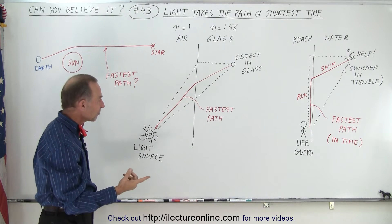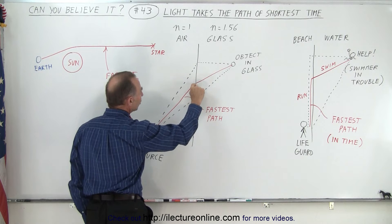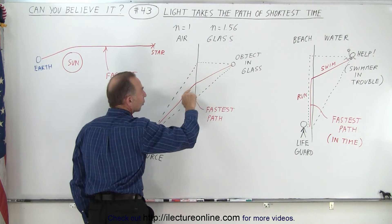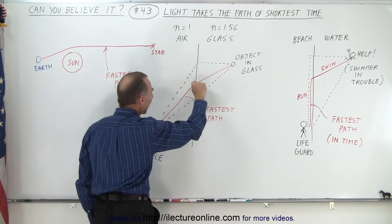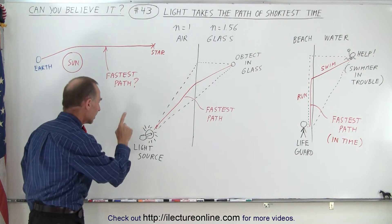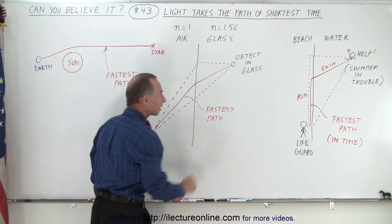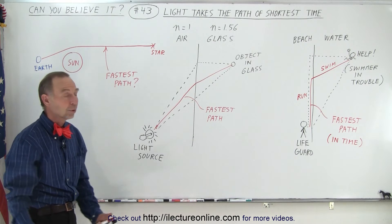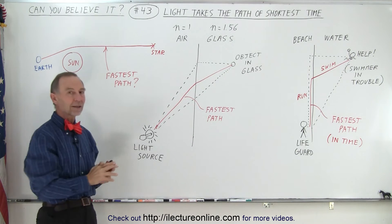It turns out, just like with the lifeguard, if light shines in this direction and then changes direction when it wants to go into the glass and then reaches the object over there, this path will take the least amount of time for the light to get from here to here, from the source to the object. And so that's the path that light will take. Light will take the path that takes the least amount of time.